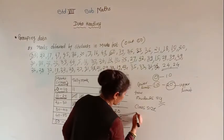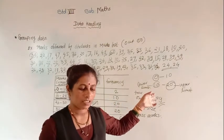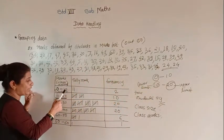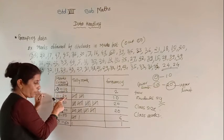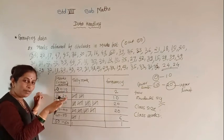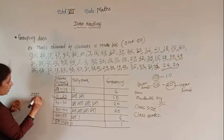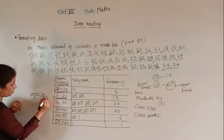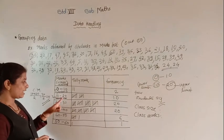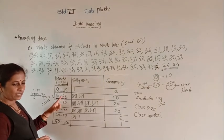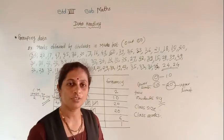The class mark is the midpoint of the upper limit and lower limit. To find the midpoint, add the upper limit and lower limit and divide by 2. For example, for class interval 10 to 20: 10 plus 20 divided by 2 equals 30 by 2, which is 15. So 15 is the class mark. The class size is 10, the lower limit is on the left-hand side, and the upper limit is on the right-hand side.